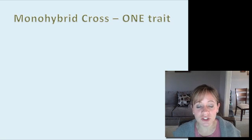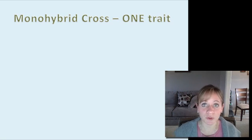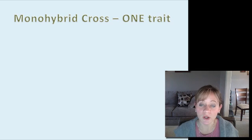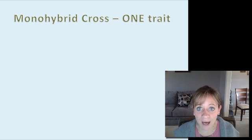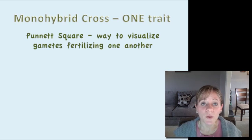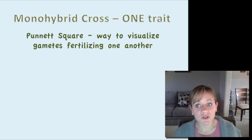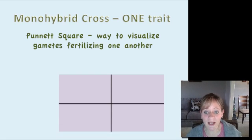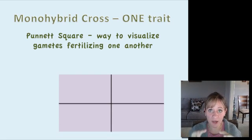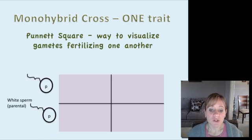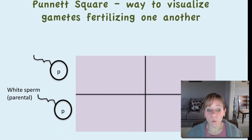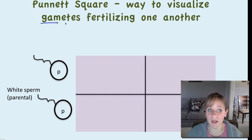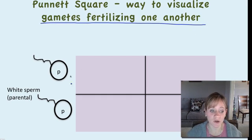What we just showed was an example of a monohybrid cross — we were following just one trait, the trait of flower color. The way that we can easily visualize this is by using a Punnett square. Let's take a look at how the parental cross was done in order to get that F1 generation.